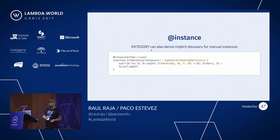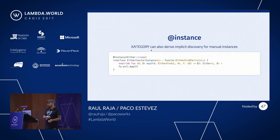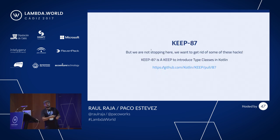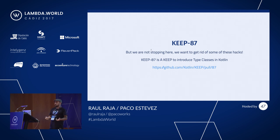If you wanted to write a manual instance for whatever reason, you can do so as well. Flag it as an @instance — that's basically saying this is a global implicit — so whenever the functor instance for Either is required, this one will be brought into your scope. And finally, we're actually trying to change this at the language level. There is a KEEP that you can visit and voice your opinion on, and this KEEP formally introduces type classes for Kotlin.